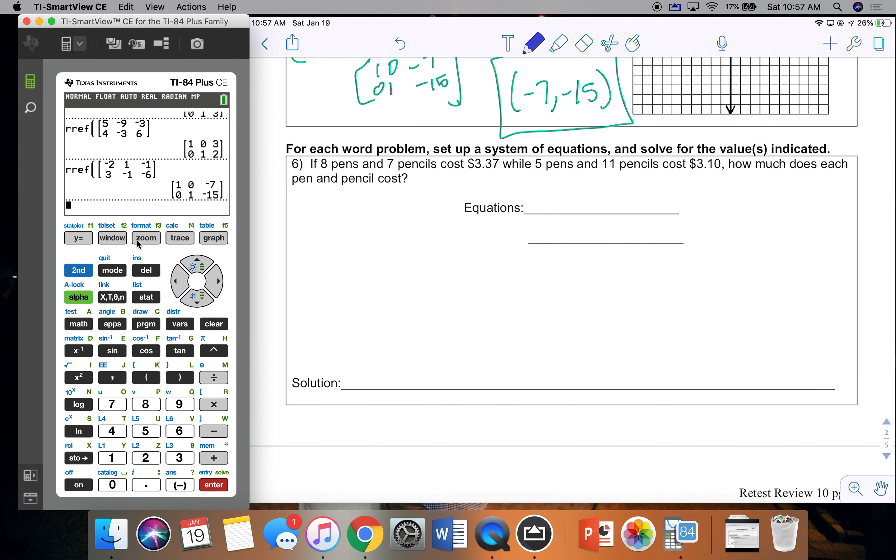So problem 6, they tell me for each of the word problems, set up a system and solve for the value indicated. So if I have 8 pens and 7 pencils that cost me 337, and 5 pens and 11 pencils cost me 310, how much does each pen and pencil cost. So remember, it's important to define your variables first. They are asking me about pens and pencils, so those are going to be my variables because that's what they're wanting to know.